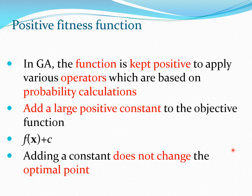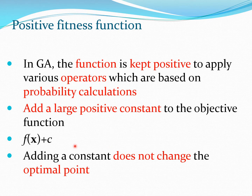One requirement in GA is that the function should remain positive, because we will use various mathematics on these functions — calculating fitnesses, probabilities, and so on. To deal with only positive numbers, a simple technique is to add a large positive constant C to the objective function. Since f(x) + C yields the same optimal point as f(x) — adding a constant does not change the optimal point, whether it's a minimum or maximum.